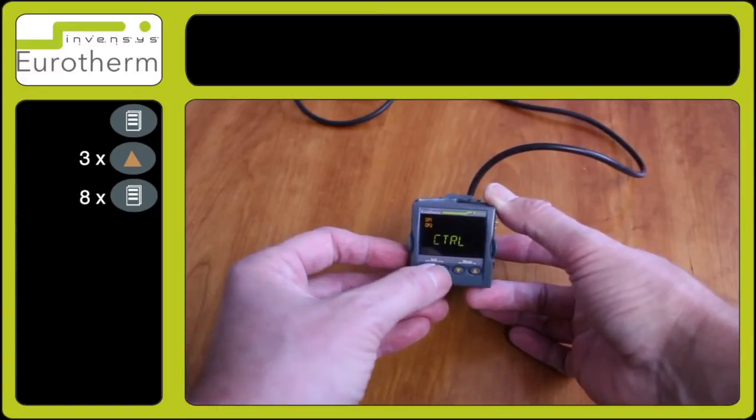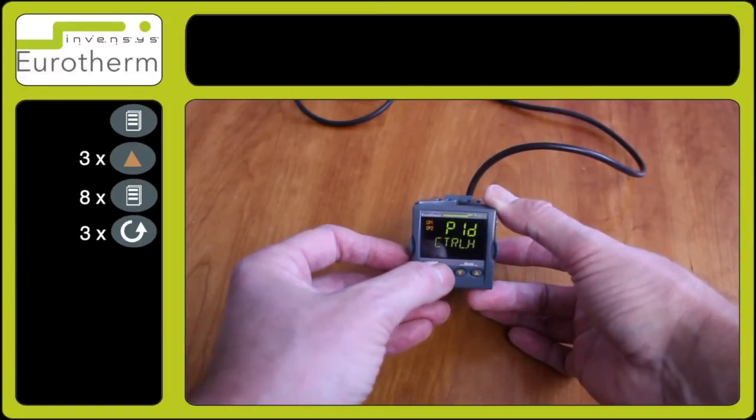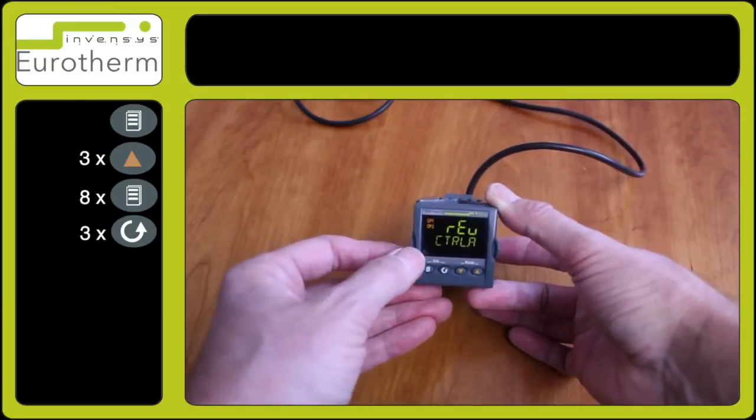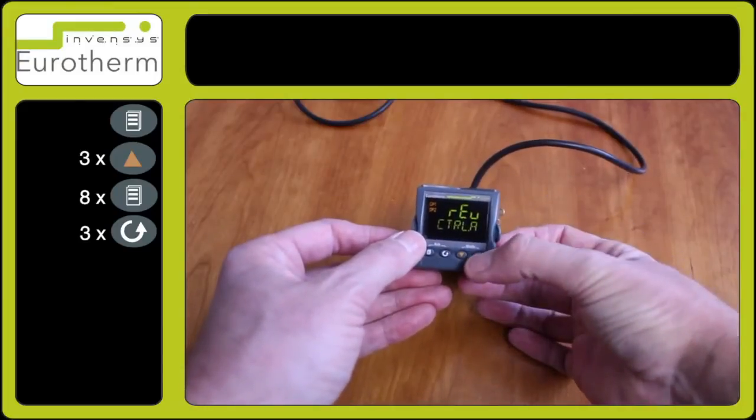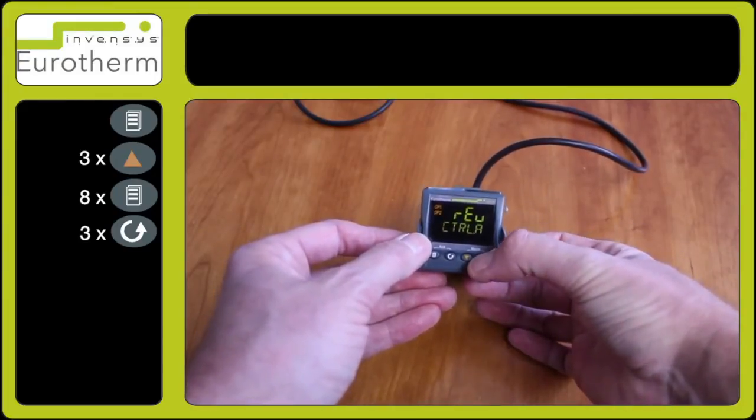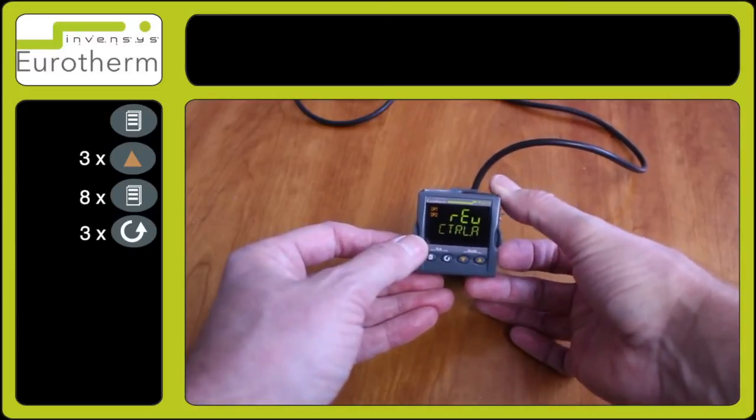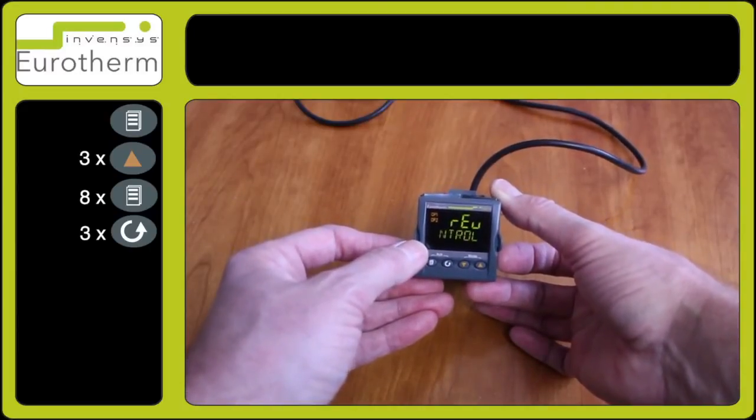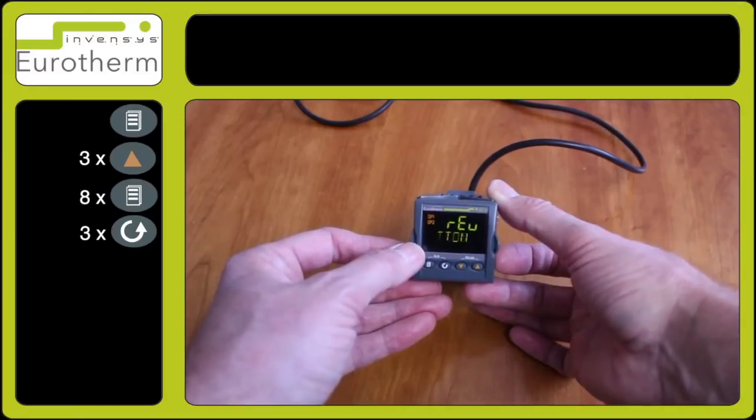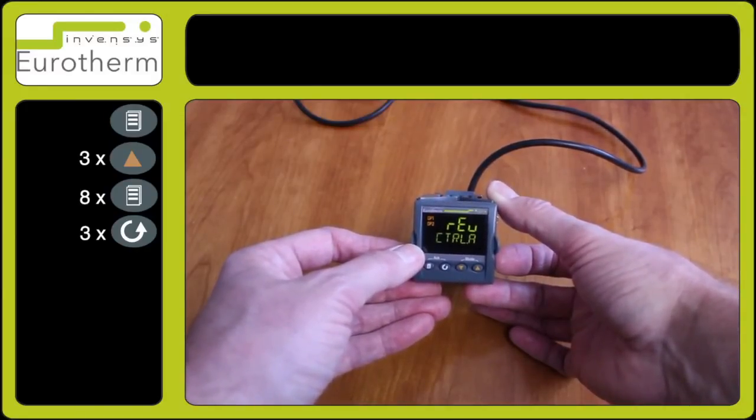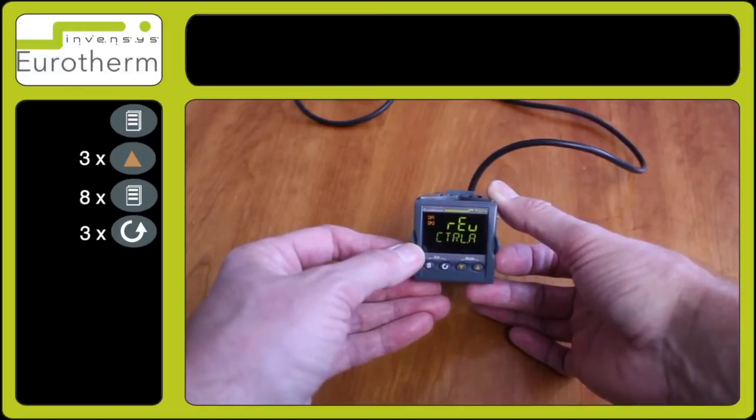Press the scroll key until CTRL.A appears. You can see in this particular case it is set to REU, which is a control action for the set point and the temperature. When the set point is above the temperature, this will activate the output.